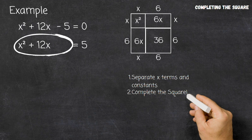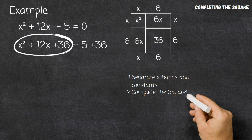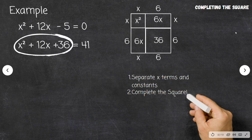So in order to complete this square here on the left, we simply add 36. Now this square is considered complete. If we add 36 to one side of the equation, we have to add 36 to the other side of the equation. So let's add these two constants together on the right: 5 plus 36 gives us 41.